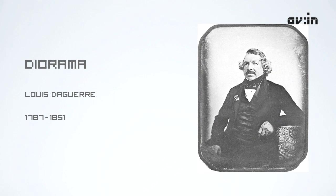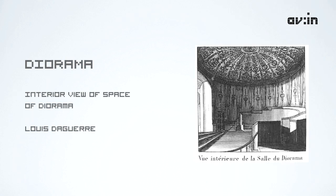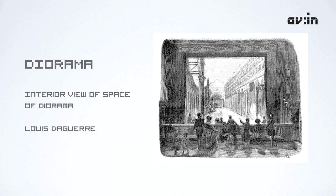Louis Daguerre further developed the work of Niépce in photography and also invented the diorama. This was a theatrical device capable of producing for audiences the sensation of depth on the stage. This effect was possible through the layering of hand-painted translucent panels, all arranged in a straight line. He refined the play of lights, shadows, and sounds, which added dramatic emotion to the experience. The diorama was a unique and popular theatre show.